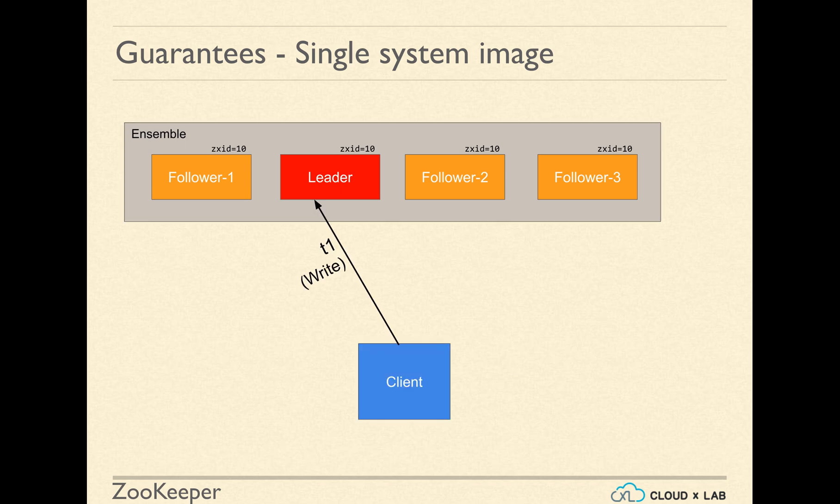When a client sends a request to write data, the request would be redirected to a leader if it is sent to a follower. In the diagram T1 represents the write request. Examples of a write request are creating a Z node, deleting a Z node, or updating the data of a Z node.